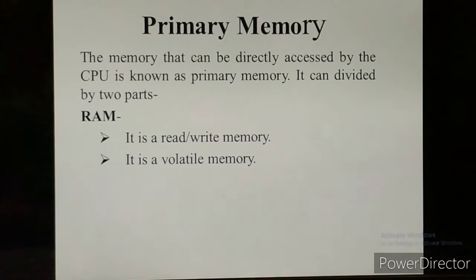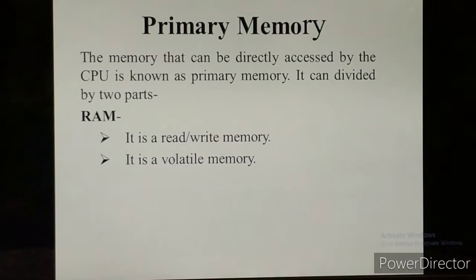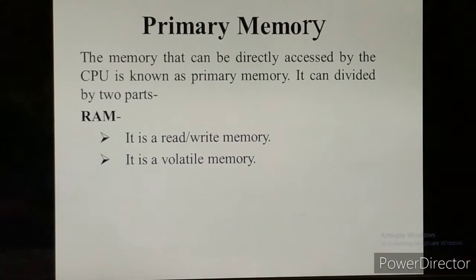RAM is also a volatile memory. It means the data disappears when the power is switched off. When your power is switched off, the data which is stored in the RAM disappears. That is why it is known as volatile memory — volatile memory means when the power is switched off, the data present in the RAM also disappears.